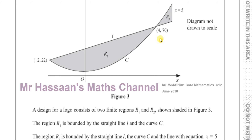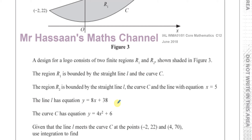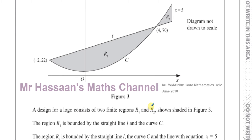So what we have to do is find the area between these two. The equation of the line is y equals 8x plus 38, and the equation of the curve is y equals 4x squared plus 6, and they're both with y as a subject, so it's quite easy. There are two main ways we could do this. One way is to find the area under the line between minus 2 and 4 — either by integration or using a trapezium — and take away the area under the curve between those same limits.